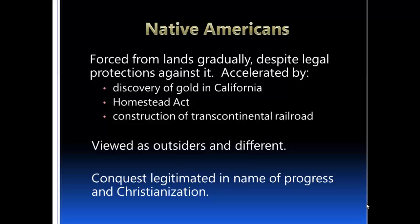It was all about progress and Christianization as European Americans moved across the nation and established their claims from ocean to ocean. Here is a map of southeast United States showing Indian removals that occurred during the Indian Removal Act of 1830, which was strongly supported throughout the South. The dark green areas are where Native Americans were removed, and the light yellow areas are where they were sent.